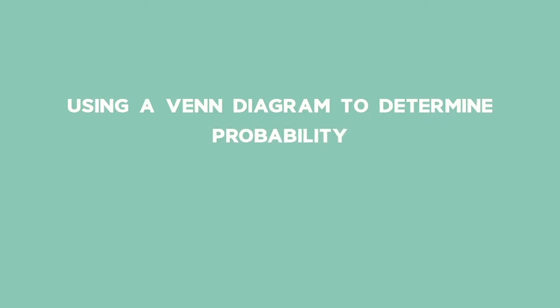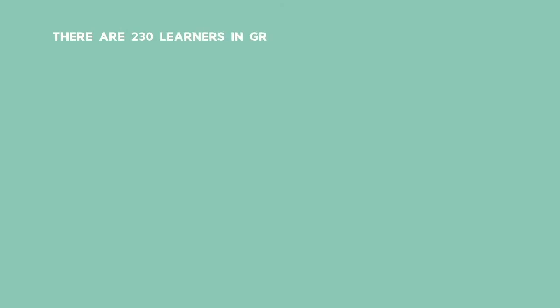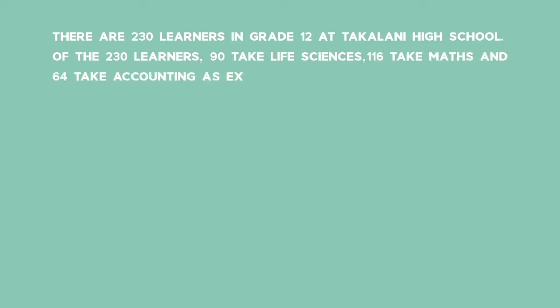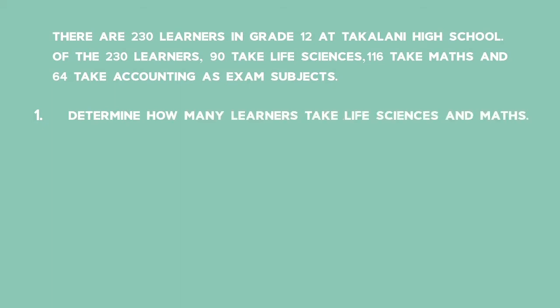Example 1: Using a Venn diagram to determine probability. There are 230 learners in Grade 12 at Takalani High School. Of the 230 learners, 90 take Life Sciences, 116 take Maths, and 64 take Accounting as exam subjects. Question 1: Determine how many learners take Life Sciences and Maths.